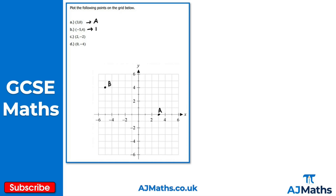For point C we have (2, -2). We go two units to the right — one, two — and because the y-coordinate is negative we go down two units — one, two. That gives us point C.